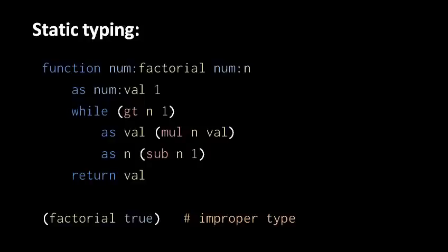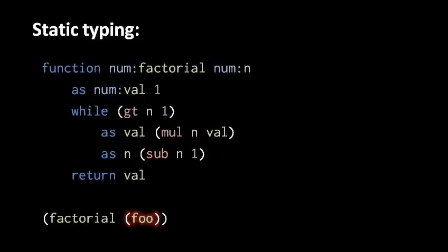The advantage is that before the program is even run, the compiler or interpreter can analyze the code and detect any type errors. For example, when the compiler looks at a call to factorial passing the wrong kind of argument, it can see the mismatch because factorial is declared to accept a parameter of type num, not a boolean. Similarly, when we pass to factorial the value returned by a call to foo, the compiler can detect the type error before the program runs, because foo itself has a declared return type. If foo is declared to return something other than a number, the compiler will refuse to compile and give an error message.